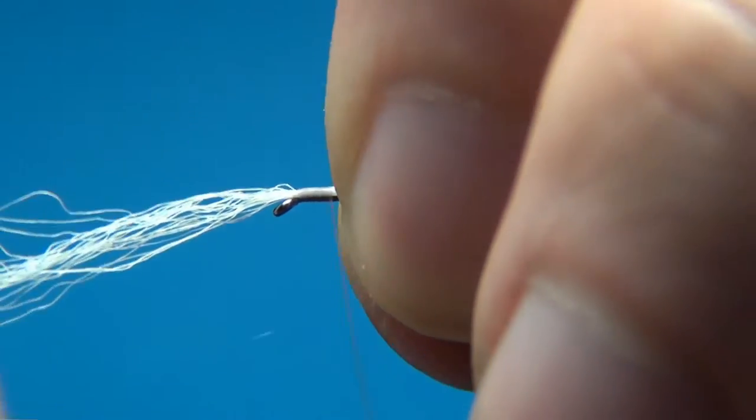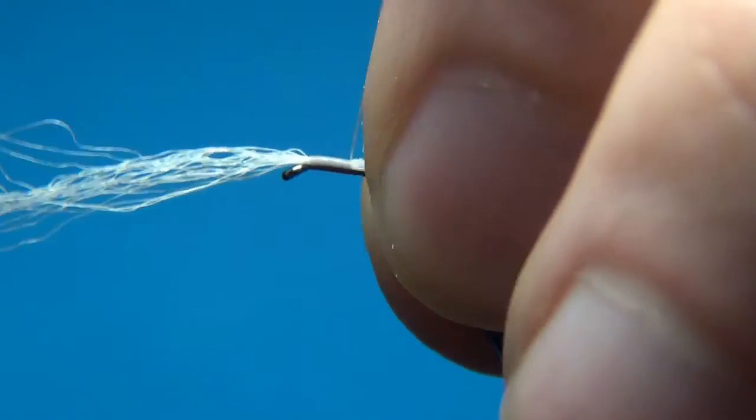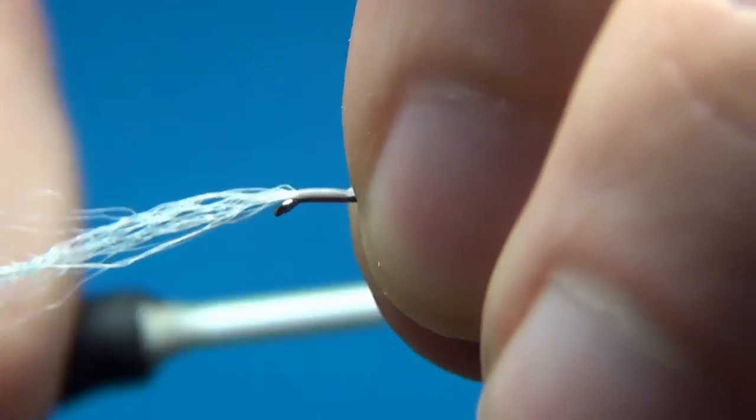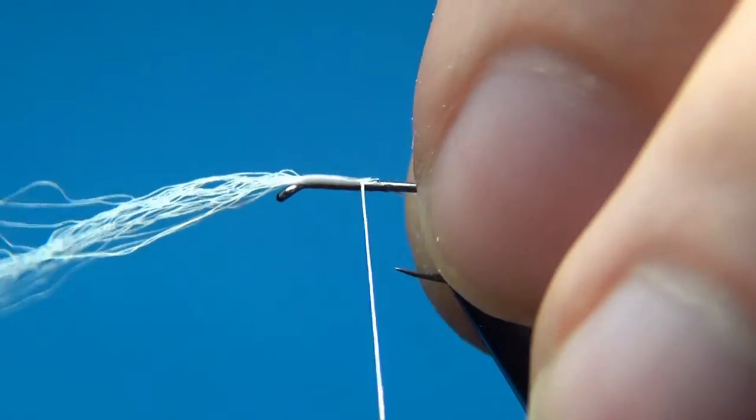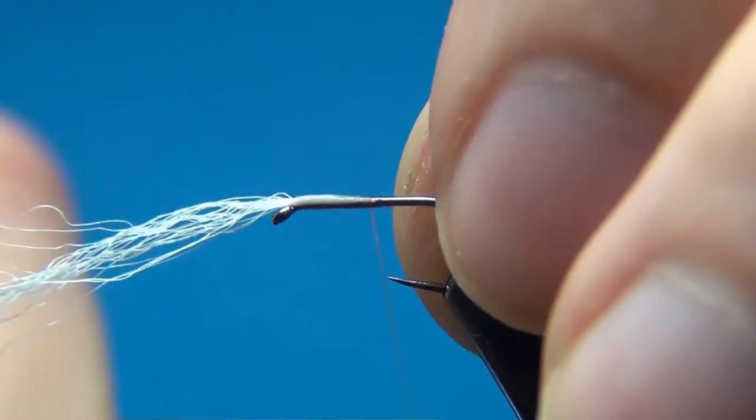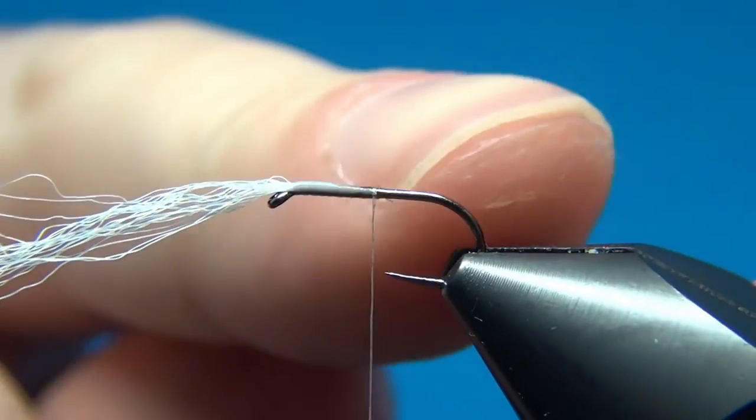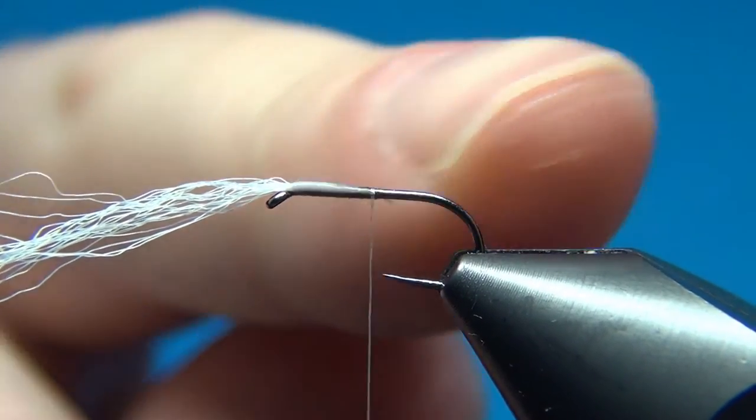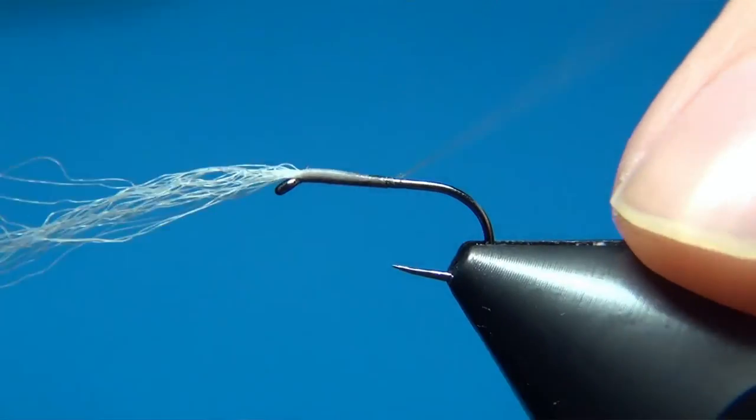And then what you do is on your way down bind all these fibers down. If you manage to do this, you will have this nice tapered body going from the front to the back.